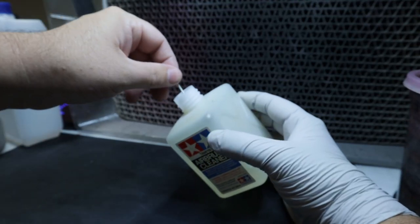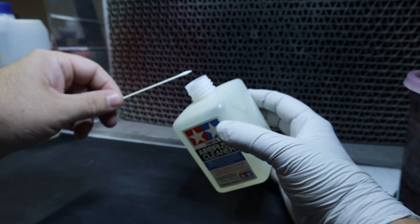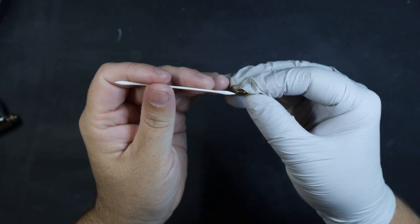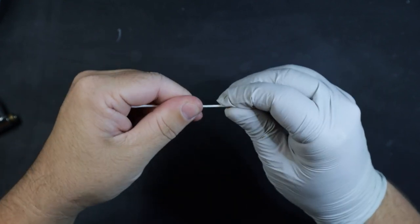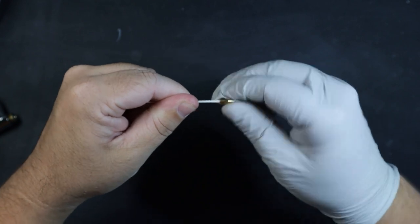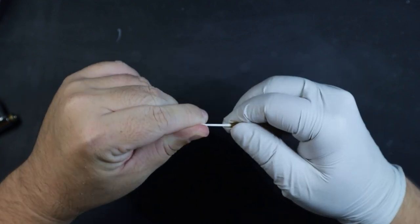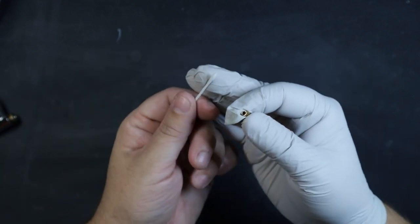Once that's done, we're going to switch to the smaller q-tips so we can clean out the nozzle. Start by inserting the q-tip into the back of the nozzle and clean by spinning either the q-tip or the nozzle itself. Continue this process until the q-tip comes out nice and clean like you see here.